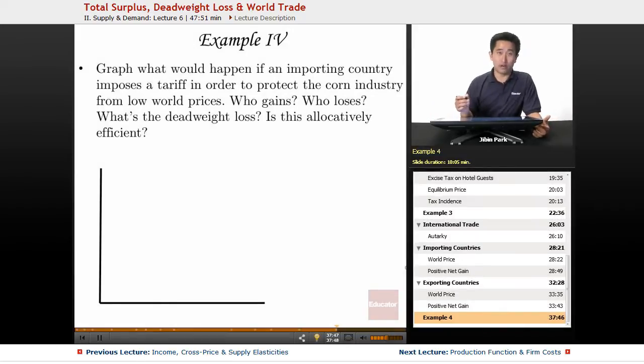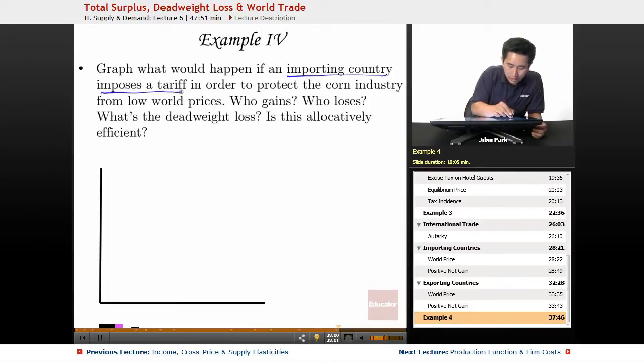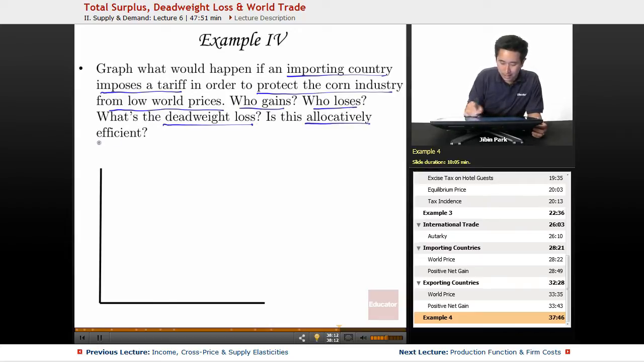Here's example number four. I'm going to add a little bit more of a twist here and show an example with trade and what happens when a tariff is actually imposed. So graph what would happen if an importing country imposes a tariff in order to protect the corn industry from low world prices. Who gains? Who loses? What's the deadweight loss? And is this allocatively efficient? So I asked a multitude of questions here, but I kind of want to mirror a question that you actually might see on the AP exam.